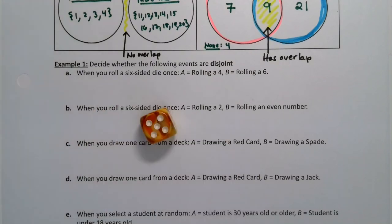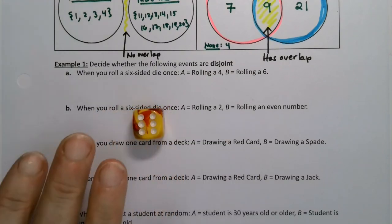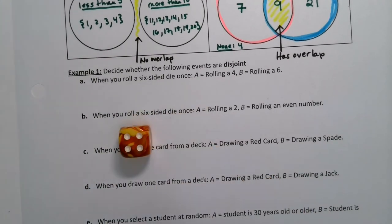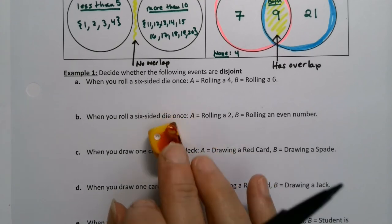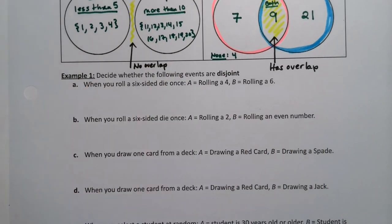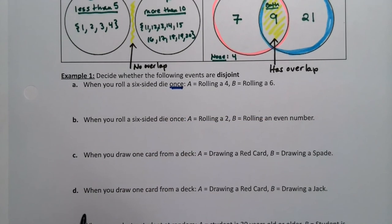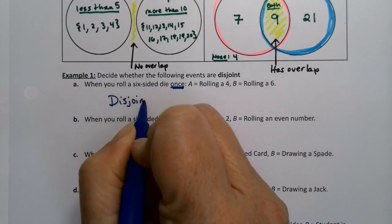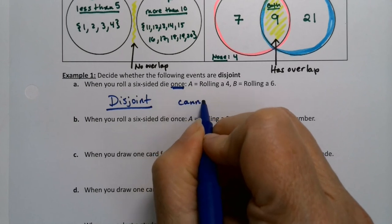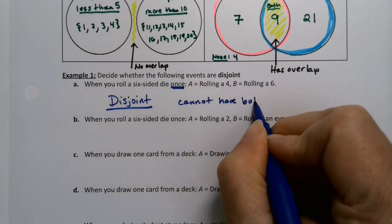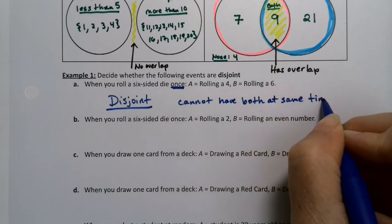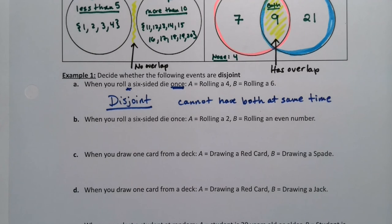So we're going to decide whether the following events are disjoint or not. You roll a six-sided die. Rolling a four and rolling a six. So if I roll it and it's a four, then it's not a six. You can't have both at the same time and roll it once. If you're only going to roll that die one time, it's either a four or a six, but you cannot have both. So this is disjoint. There's no overlap. Cannot have both at the same time.